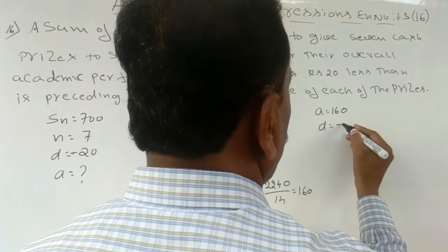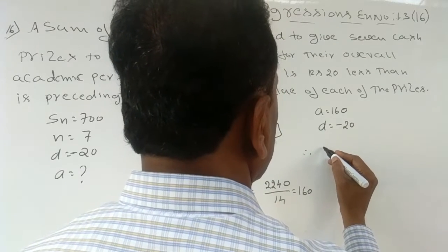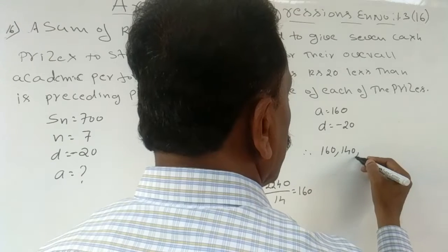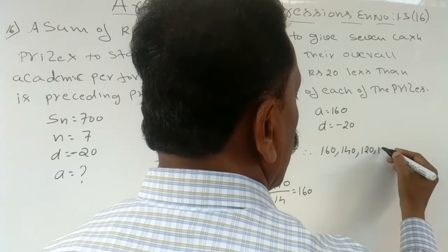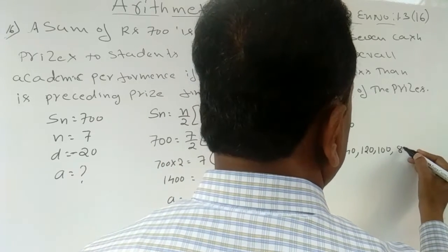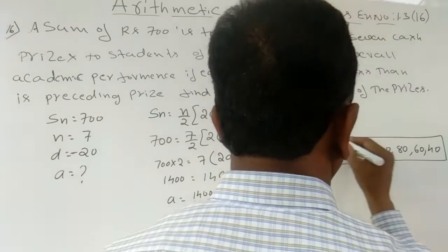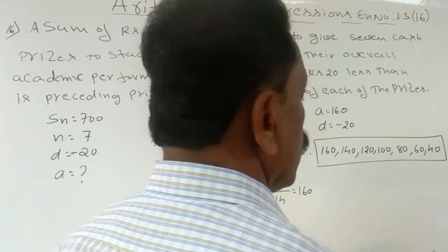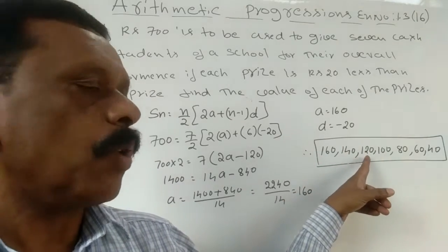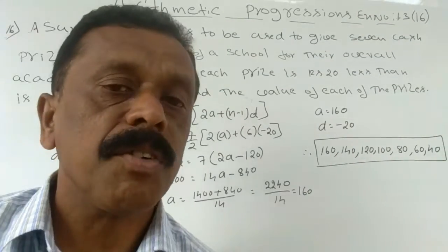With a equal to 160 and d equal to minus 20, the prizes are: first prize 160, second prize 140, third prize 120, and continuing down to 100, 80, 60, and 40. These are the values of the seven prizes.